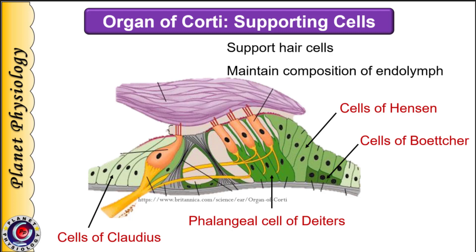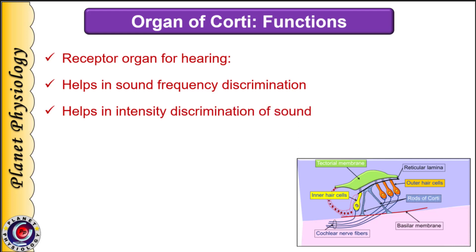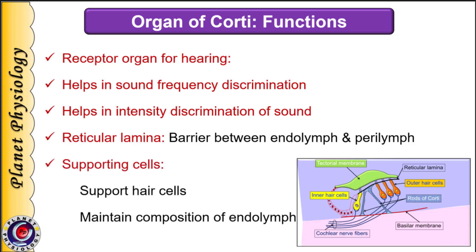This concludes the structure of organ of Corti. The organ of Corti is the receptor organ for hearing, generating impulses in response to sound waves. It also helps in discrimination of frequency as well as intensity of sound waves, due to the physical properties of the basilar membrane. The reticular lamina acts as a barrier between endolymph and perilymph due to presence of tight junctions. Supporting cells not only support the hair cells but also help to maintain the composition of endolymph. Details of frequency and intensity discrimination will be studied in the next session.